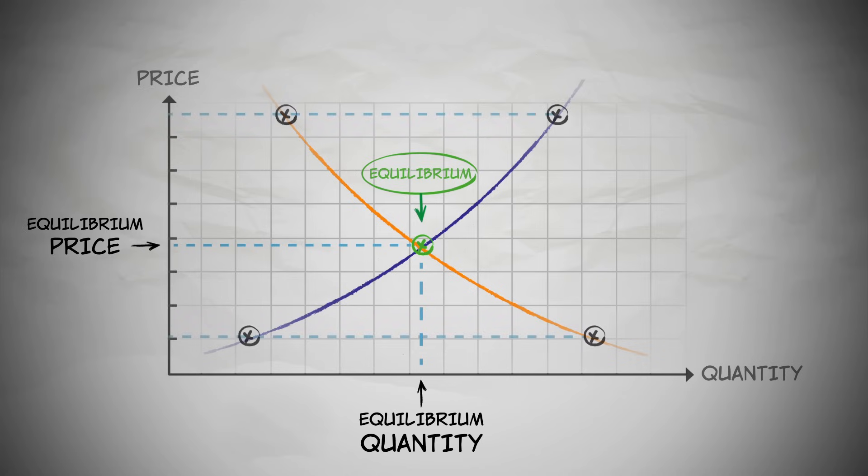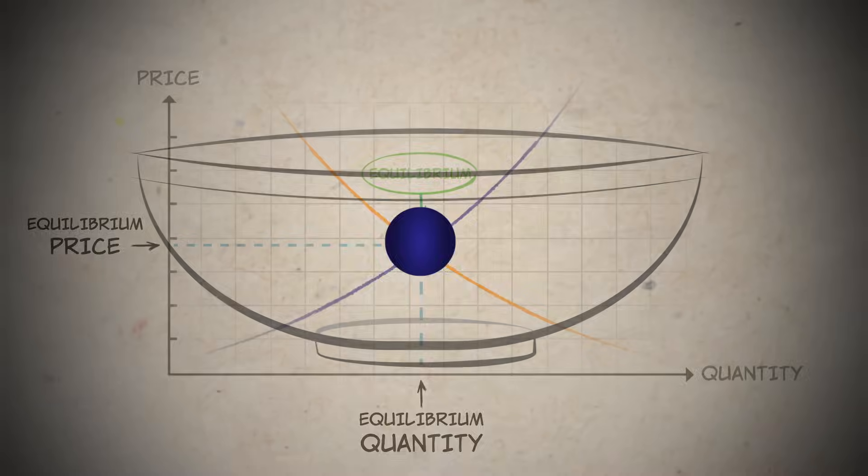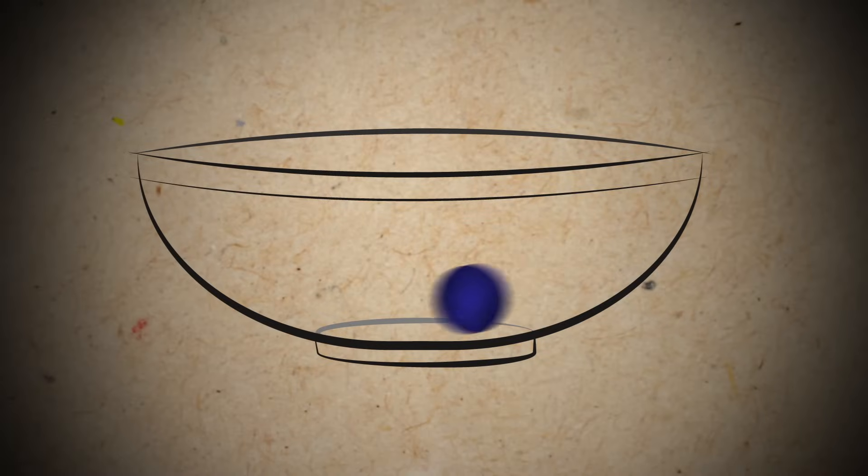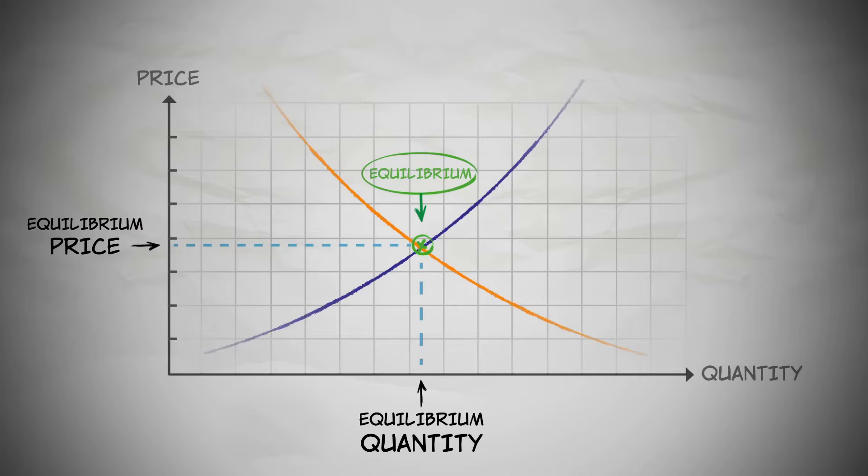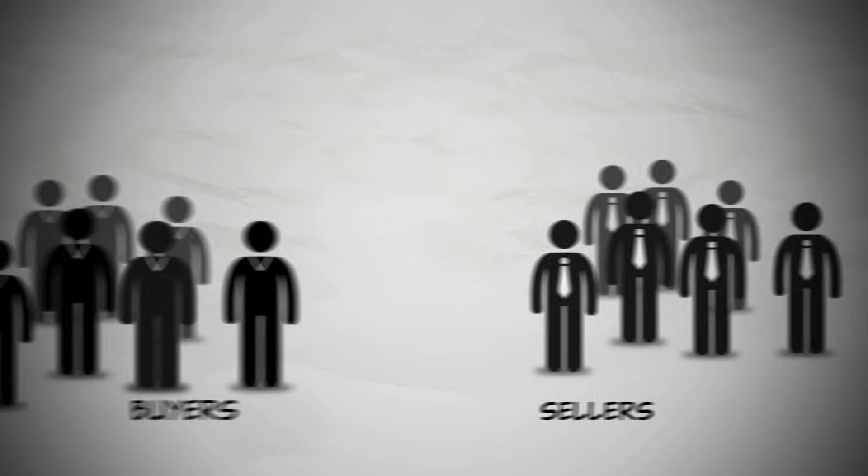Why is this the equilibrium price? At any other price, forces are put into play that will push the price towards the equilibrium price. It's kind of like a ball in a bowl where the ball always returns to one stable position. The equilibrium price is the only place where the price is stable.